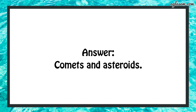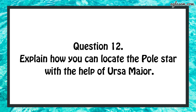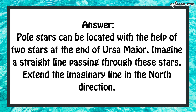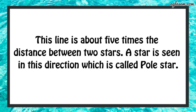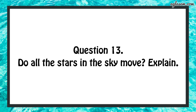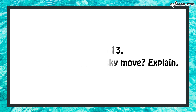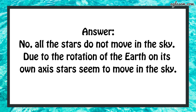Question number 12: explain how you can locate the pole star with the help of Ursa Major. The pole star can be located with the help of two stars at the end of Ursa Major. Imagine a straight line passing through these stars and extend it in the north direction, about five times the distance between those two stars. The star seen in this direction is called the pole star. Question number 13: do all the stars in the sky move? No, all stars do not move. Due to the rotation of the Earth on its own axis, stars seem to move in the sky.